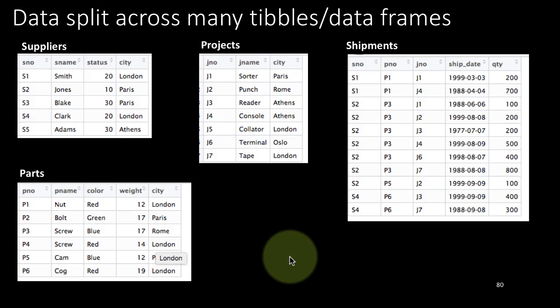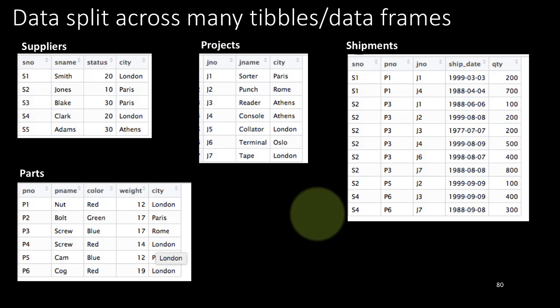Now clearly, if you want to perform an analysis of shipments, you might need information from the other tables. For example, how many shipments were made by suppliers located in London? That question cannot be answered just by looking at shipments — we have to go to the supplier table, find out who the suppliers are located in London, then come to the shipments table and take only their shipments. Or we might want all shipments where the suppliers and parts were located in the same city. To answer these kinds of questions, you have to take data from multiple tables.